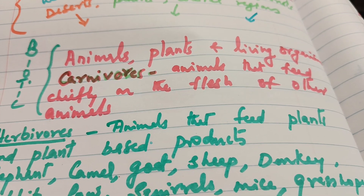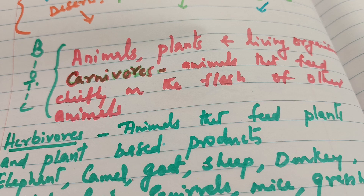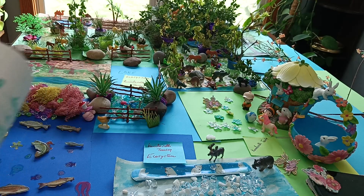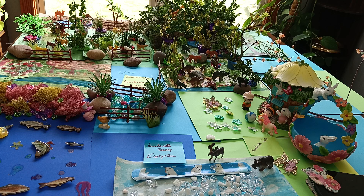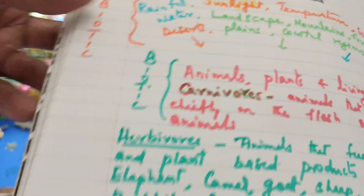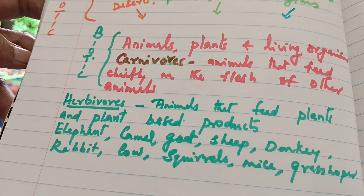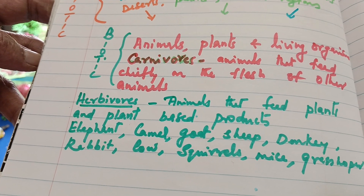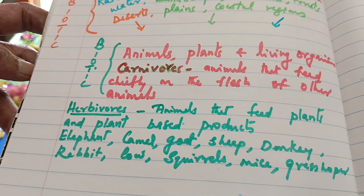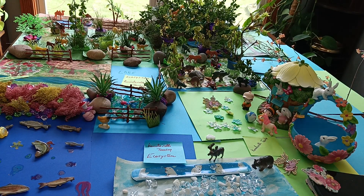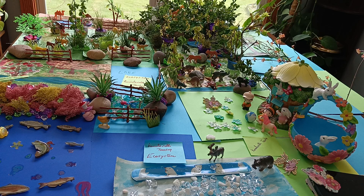Next we can see what carnivorous and herbivorous animals are. Carnivorous animals feed on the flesh of other animals, while herbivorous animals have a plant-based diet. Examples of herbivorous animals include elephant, camel, goat, sheep, donkey, rabbit, cow, squirrel, mice, and grasshopper.